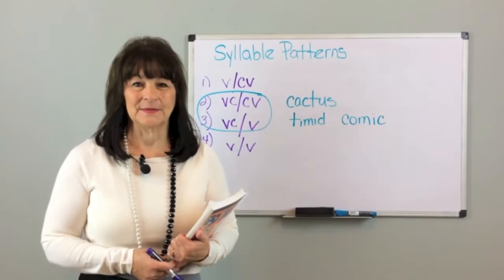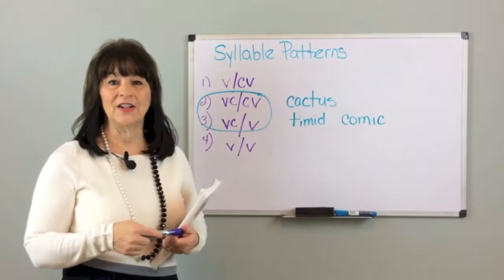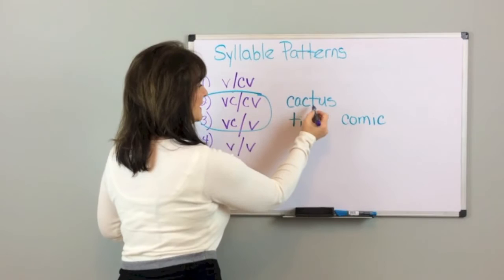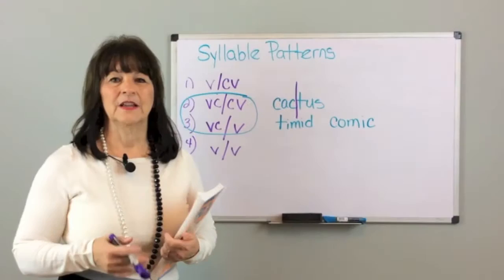The next two syllable patterns are a vowel-consonant-consonant-vowel and a vowel-consonant-vowel pattern. Here's an example in the word cactus. You take cactus, and you have a vowel-consonant-consonant-vowel, so the student knows right where to divide the two syllables.